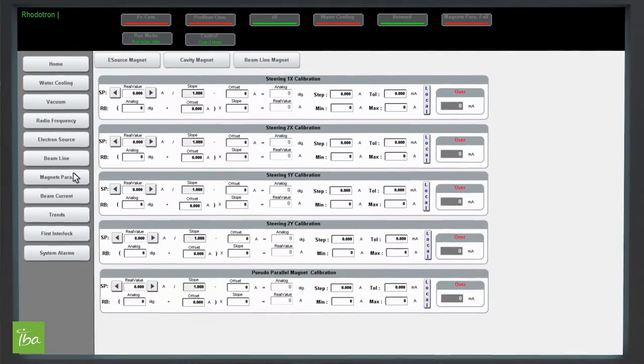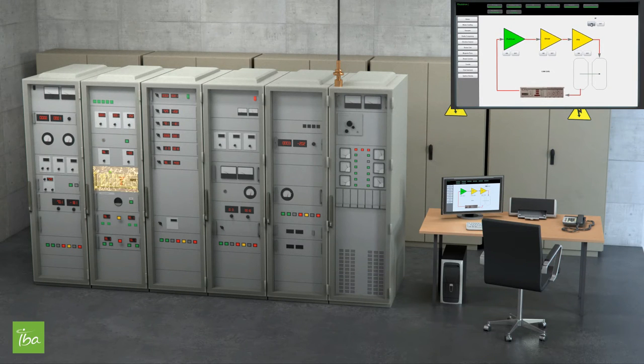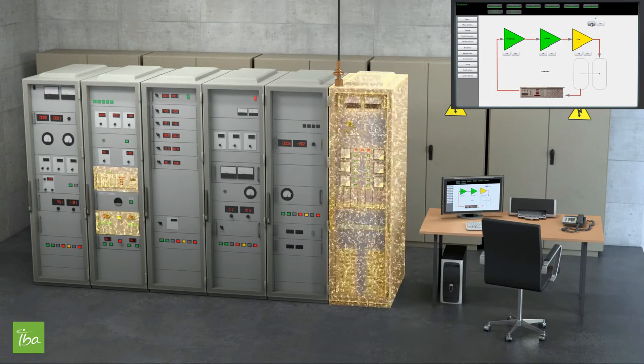As you can see, the activation of the radio frequency system happens in four different stages. A small signal is generated by the low-level RF rack. The signal is amplified by the pre-driver, then amplified a second time by the driver amplifier.